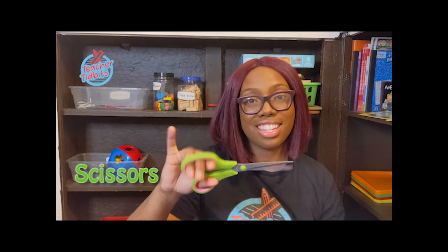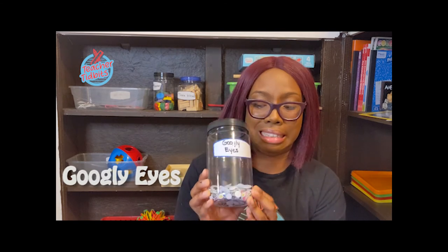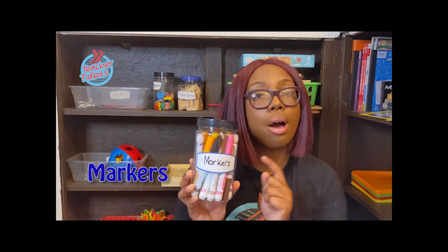For today's unicorn craft, you're going to need a pair of scissors. Remember, scissors are not toys. So always use them with a grownup. You're going to need some googly eyes. You'll also need some colored paper. You're going to need pipe cleaners. You'll also need some markers. And lastly, you'll need some school glue.